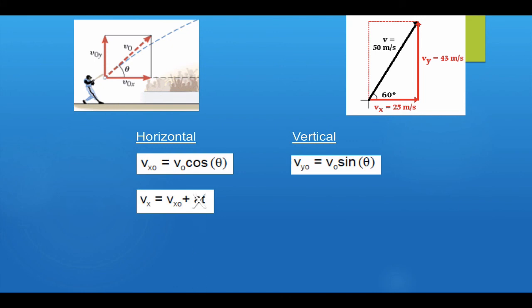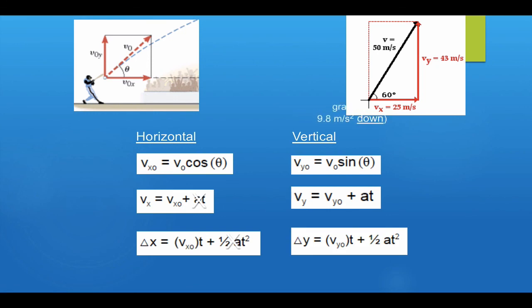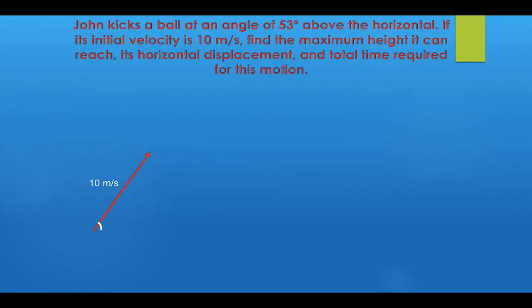At this point, we use kinematic equations to solve for what we need. Remember that in the x component, acceleration is zero, and in the y component, acceleration equals 10 meters per second squared downward. At the end of your notes, there's an angled launch example problem. I don't want to go through it in the video, but I'll cover it in class next time. You can attempt it on your own if you'd like, or leave it blank and we'll cover it together. Thanks very much, see you soon.